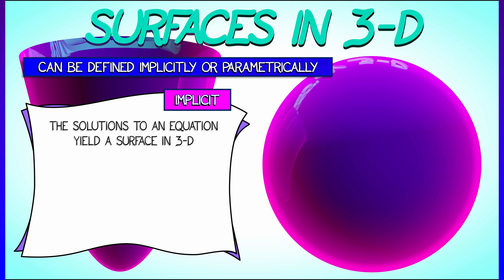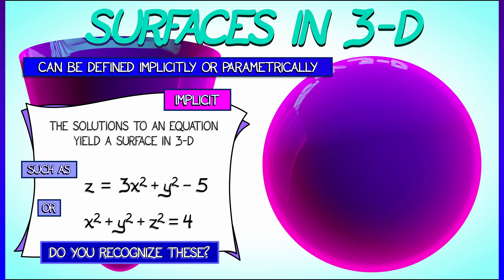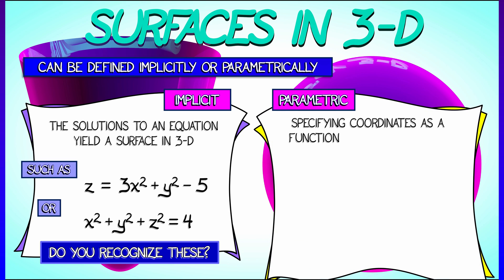Implicitly, we simply write down an equation involving three variables, say, x, y, and z. And the solutions to those equations are going to give some two-dimensional surface. Maybe you recognize the surfaces associated to these.